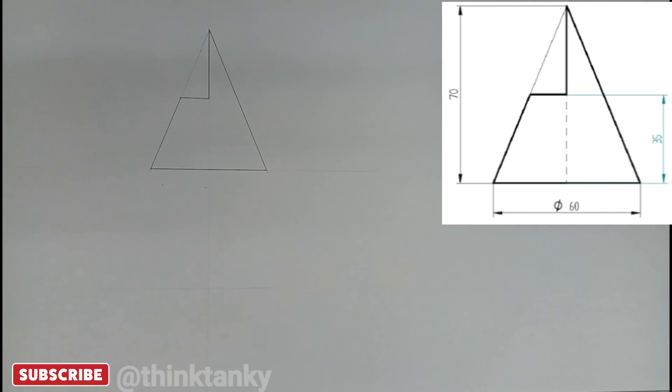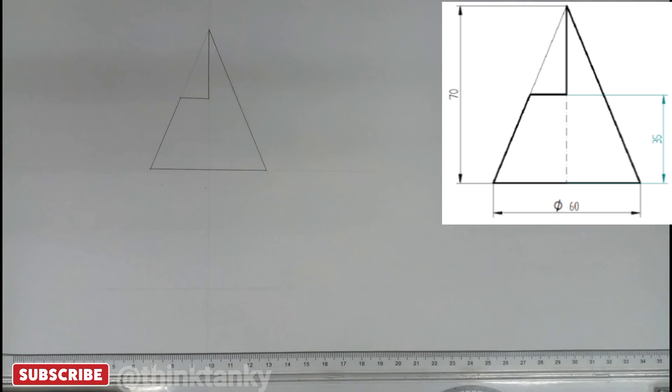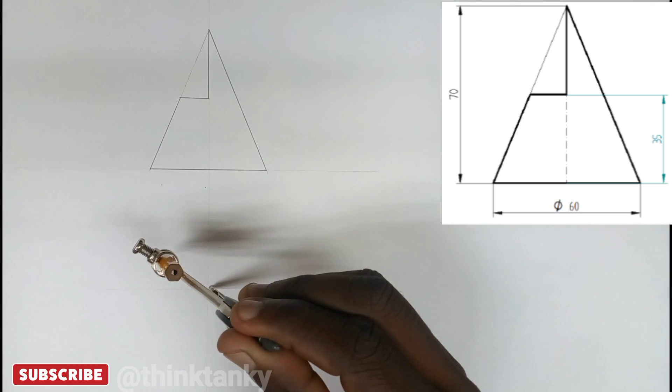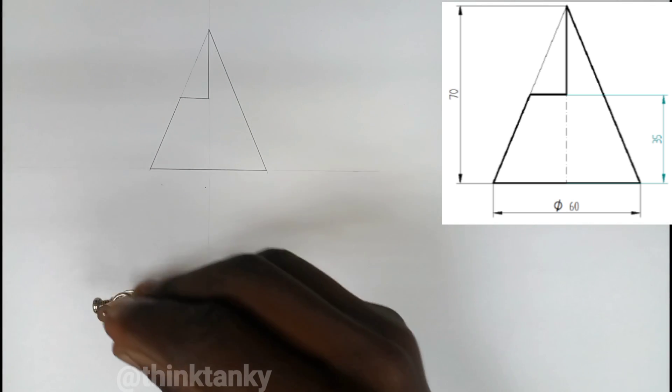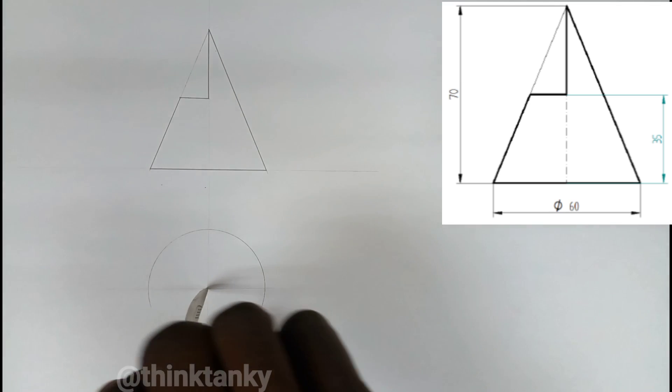Hi guys, welcome back to thinking online learning. In this video I'm going to draw the development of the lateral surface of the remaining portion of the cone. The first thing you have to do is draw a circle. Since the cone has a radius of 30, that means our plan has a radius of 30 as well.